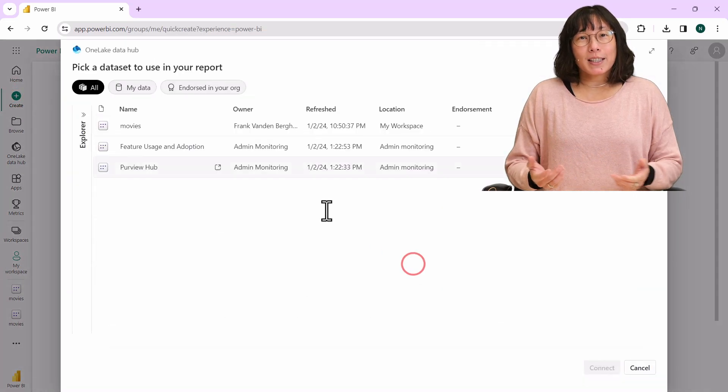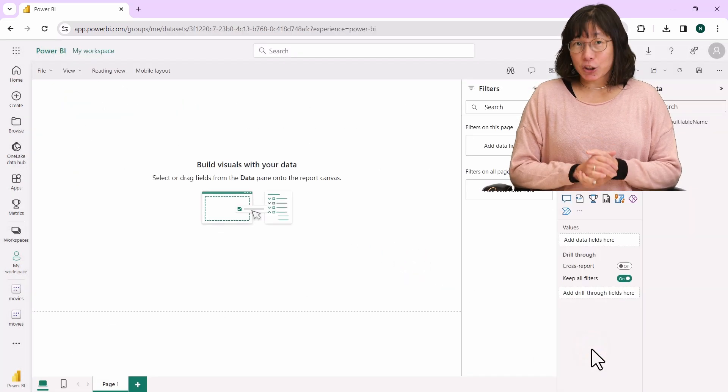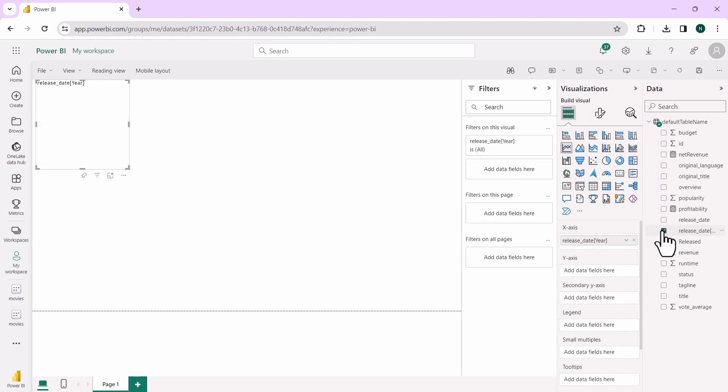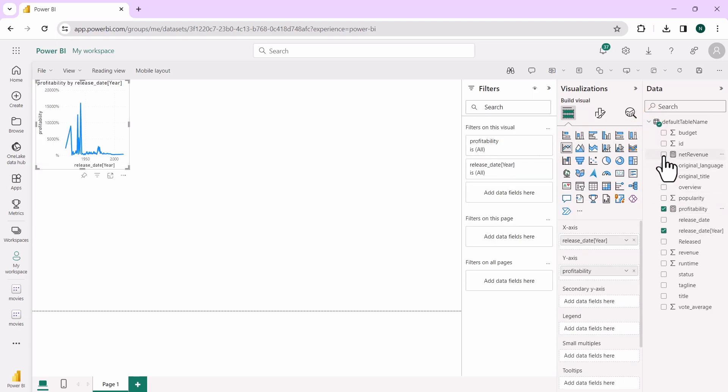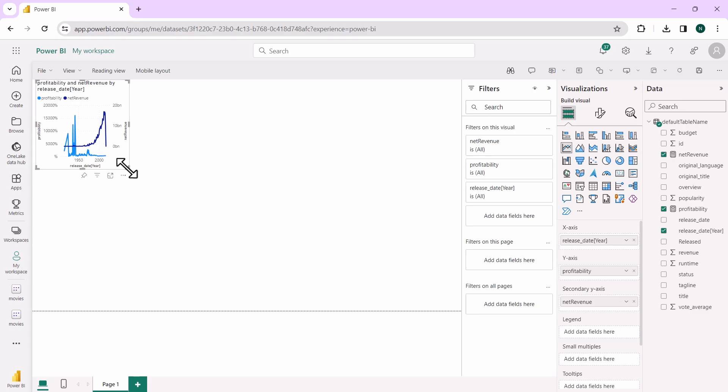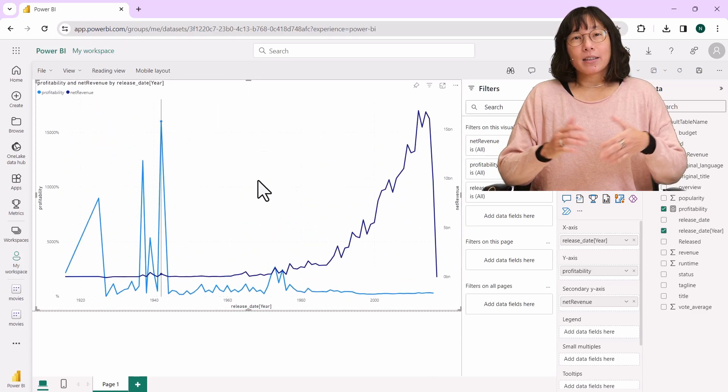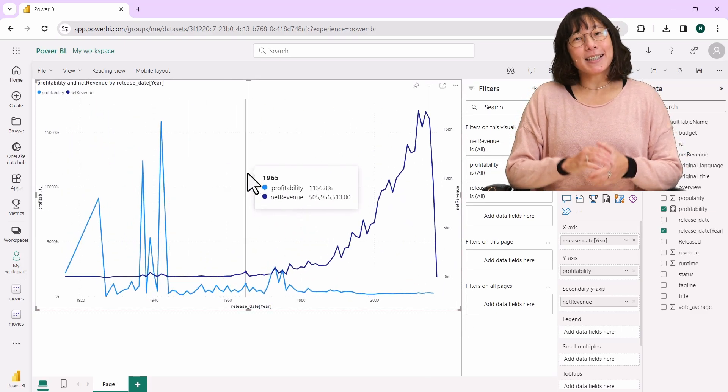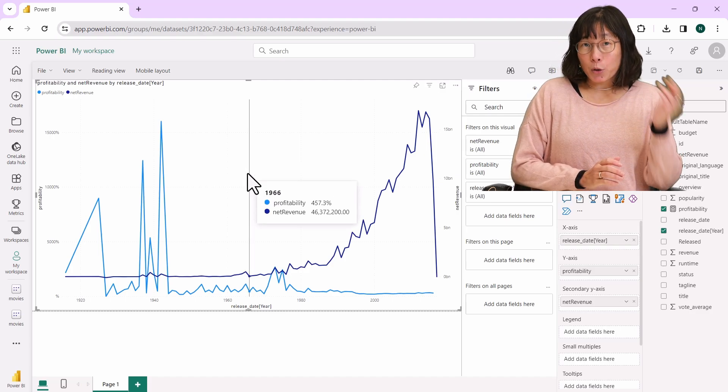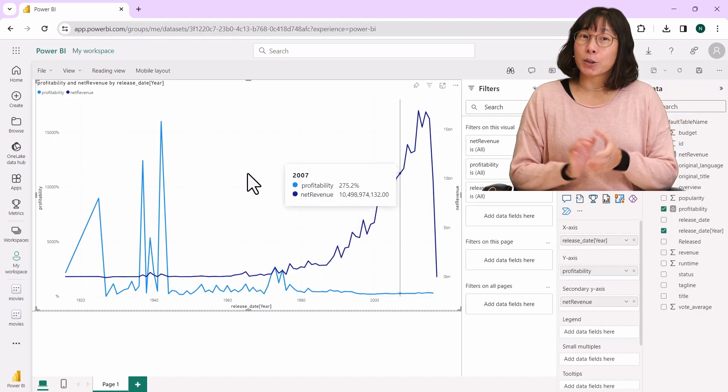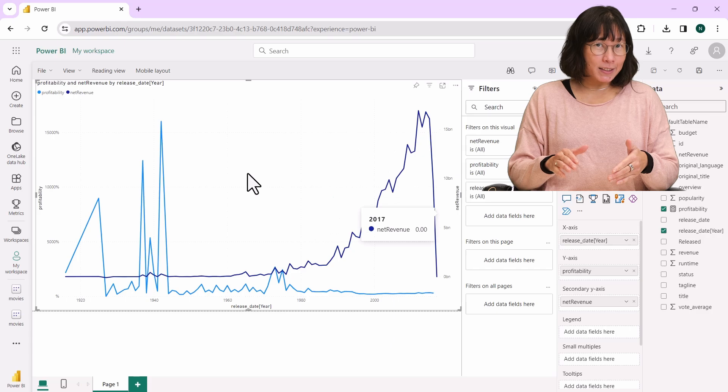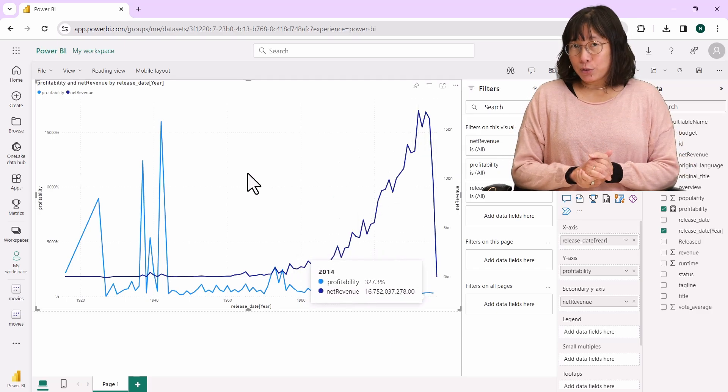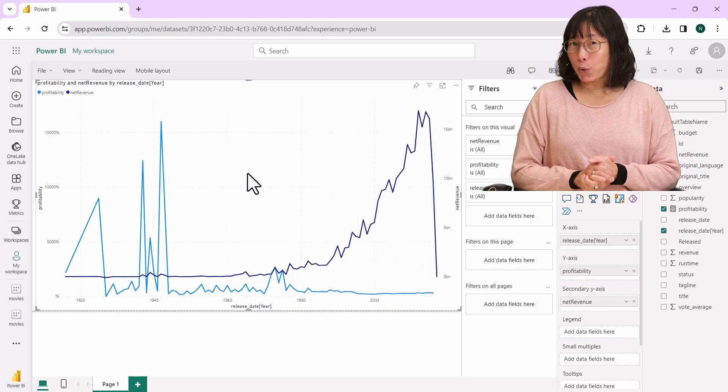To analyze the film industry financial trends, we'll display the evolution of movie profitability and net revenue over the years in Power BI. This visualization highlights a key trend. While the profitability of movies in terms of percentage is declining, their net revenues are still experiencing growth.